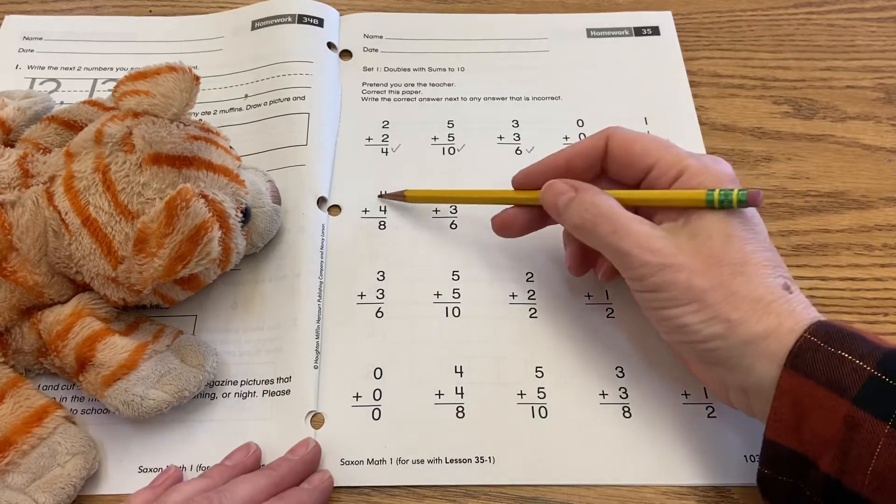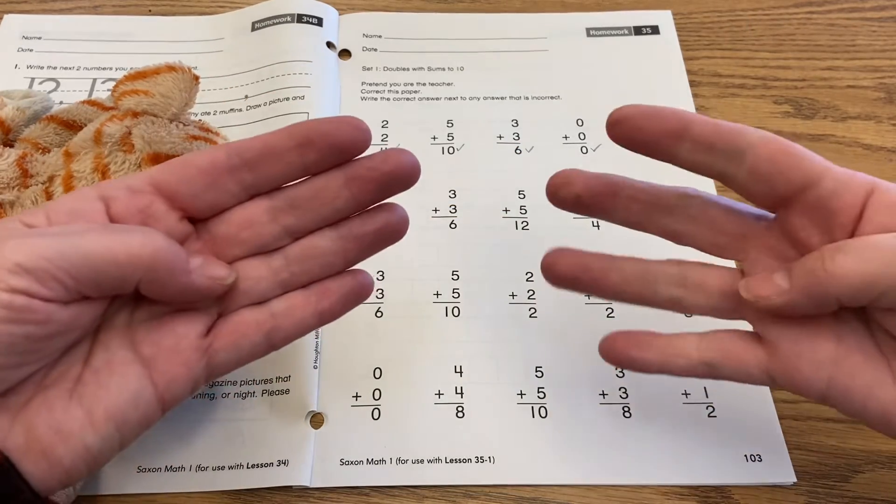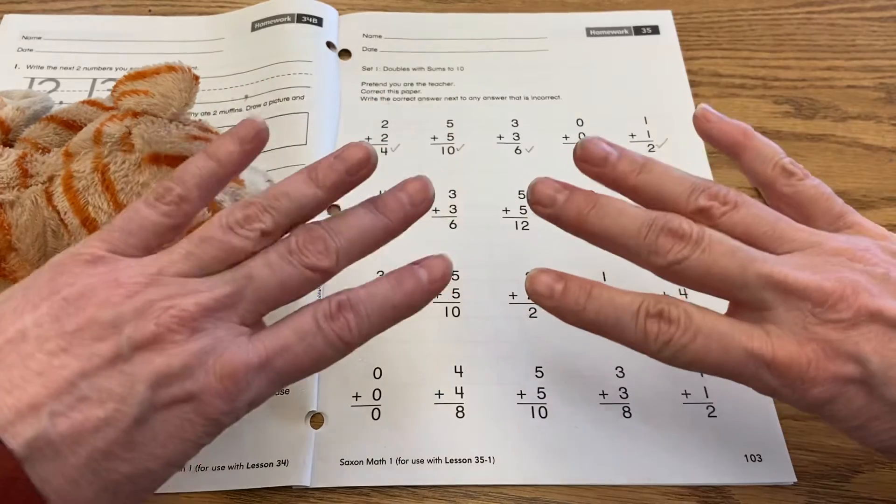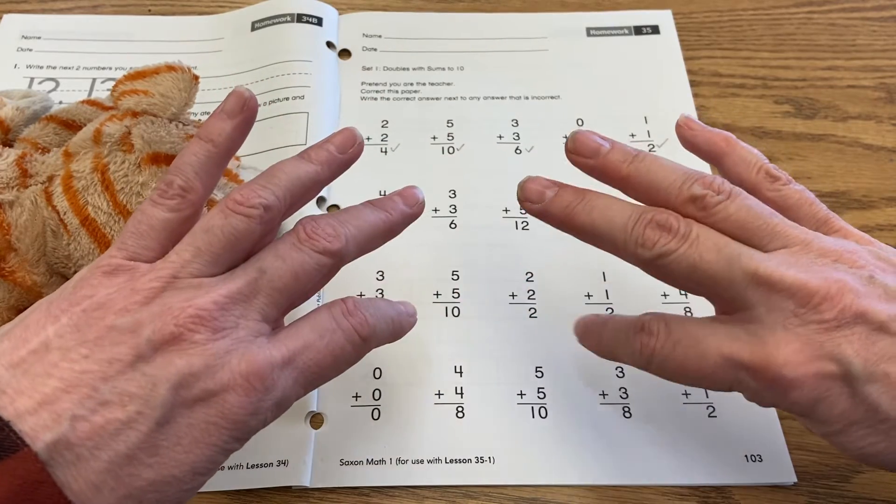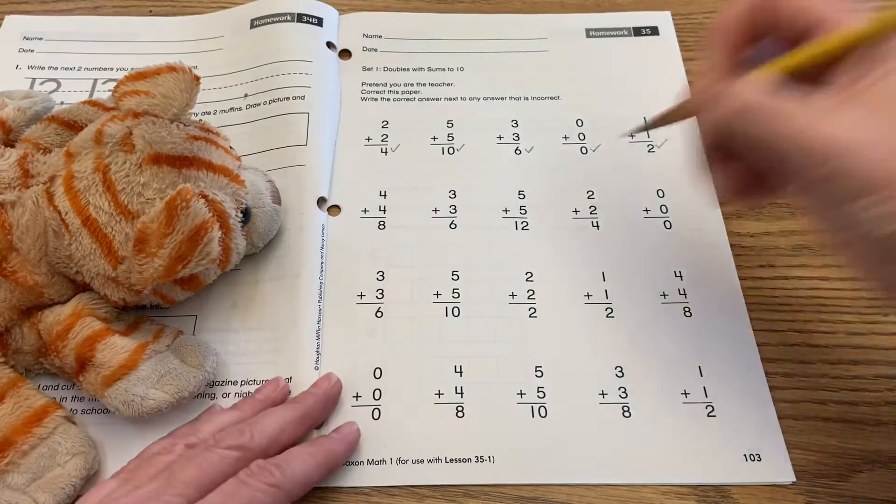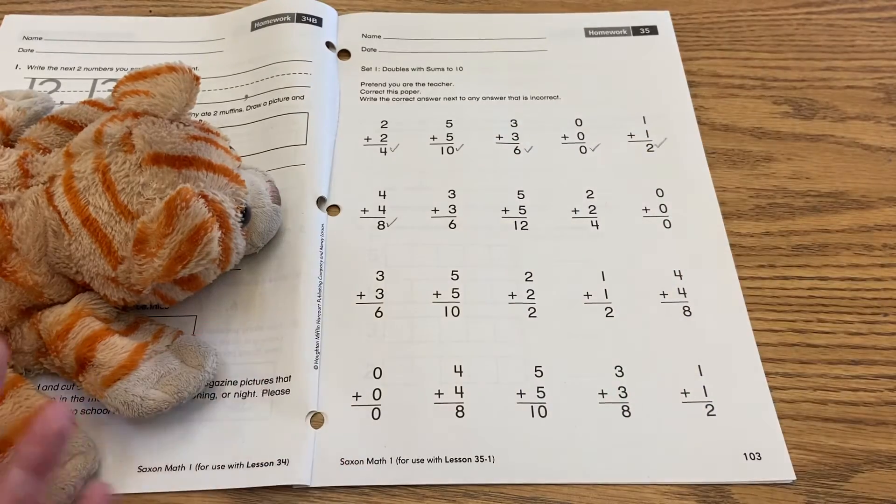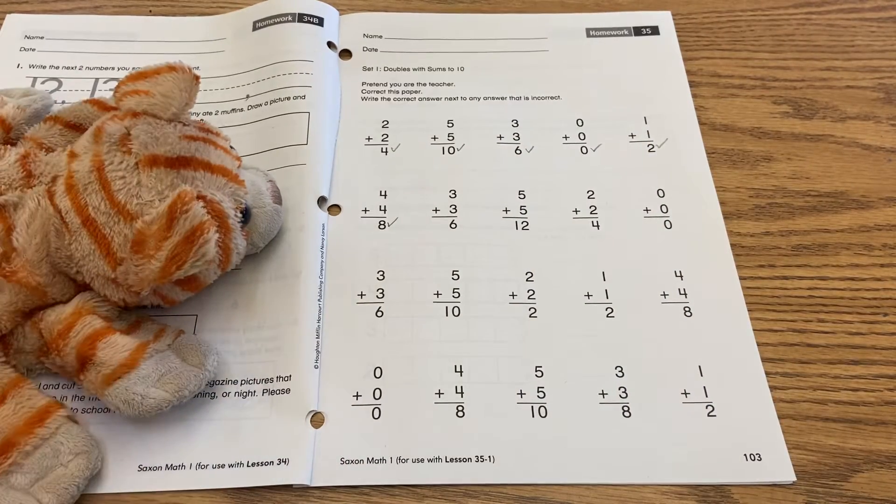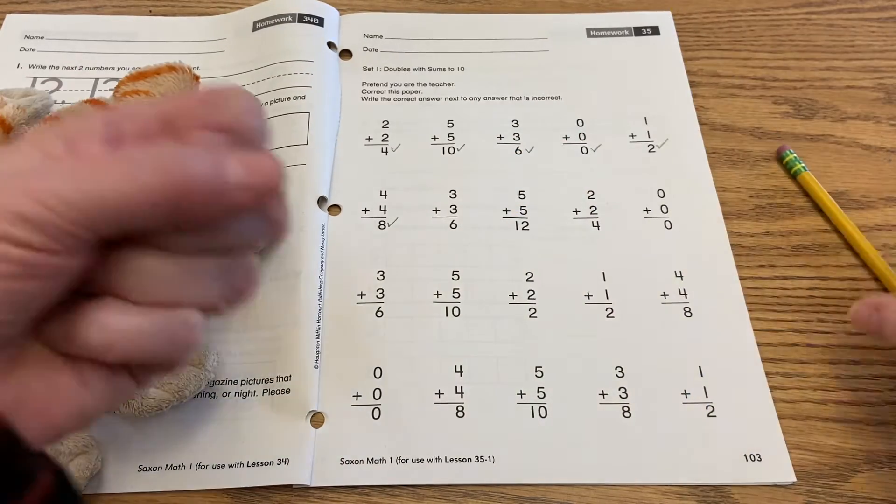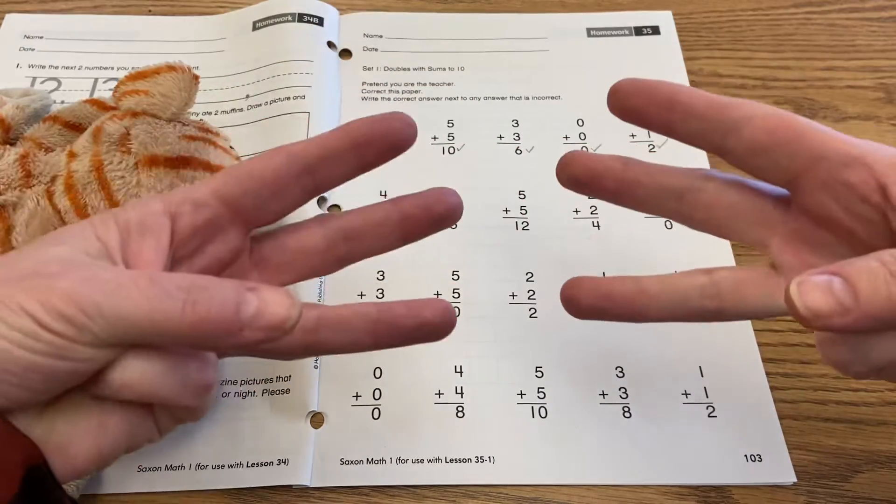Four plus four, eight. Let's check. Here's four fingers here. Four fingers here. One, two, three, four, five, six, seven, eight. Yes. CaliCat looks like he's a little whiz at math, right? Three plus three, six. One, two, three, four, five, six. Yes.